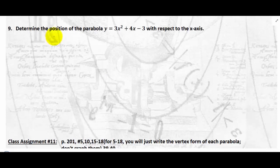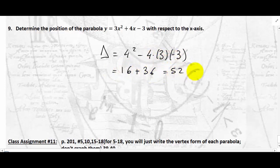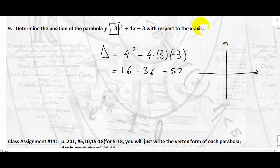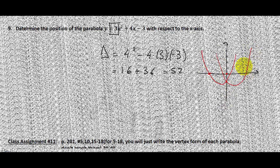Let's do the last example. You do number 8 and I will do number 9: determine the position of the parabola with respect to the x-axis. Computing the discriminant: Δ = b² − 4ac = 16 − 4(3)(−3) = 16 + 36 = 52. Since Δ > 0, the parabola cuts the x-axis in two places. The leading coefficient is positive so the parabola is concave up, and the y-intercept is −3. Thank you for watching.